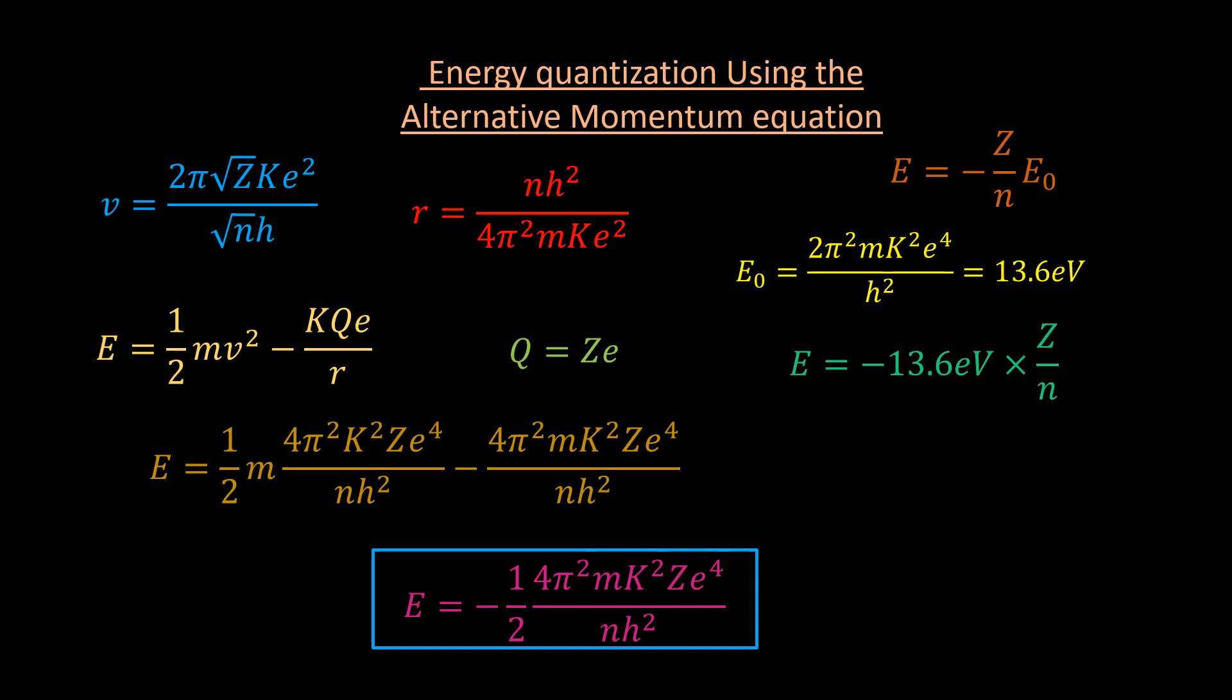This equation looks identical to this one that we derived earlier using the Bohr model, with the difference being that the z over n term is squared in the Bohr model result. This again shows how consequential the Bohr model is. Every value of n that can be calculated using the Bohr energy equation can also be gotten using my energy equation, and my equation can calculate for even more orbits. For example, if z on n is a positive integer, the Bohr energy equation can only produce energies such as 1, 4, 9, 16 times E0, while my energy equation can produce energies such as 1, 2, 3, 4, 5, and so on times E0.